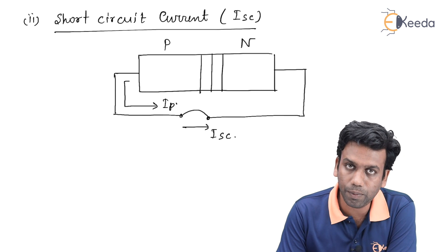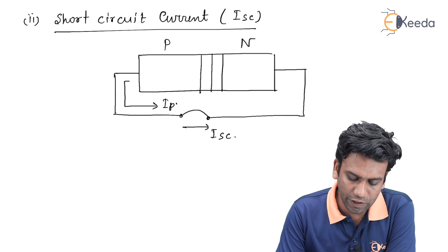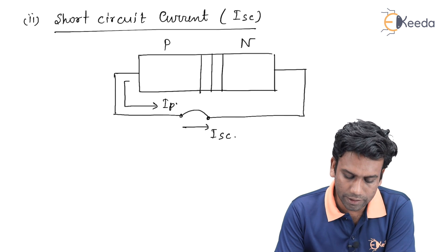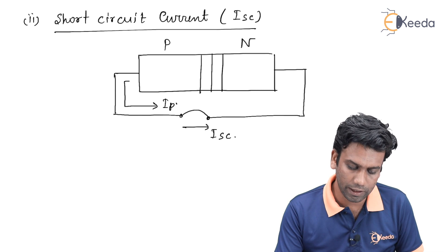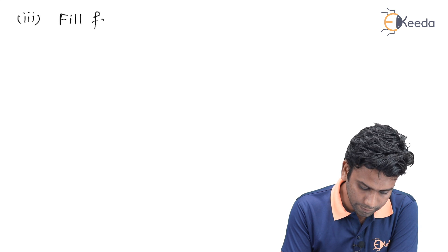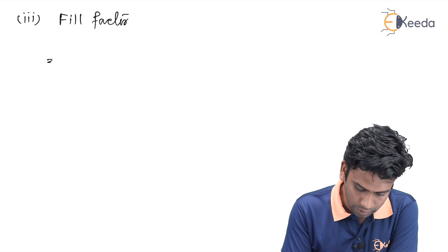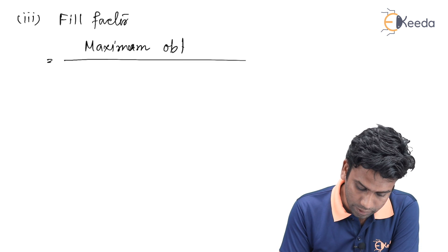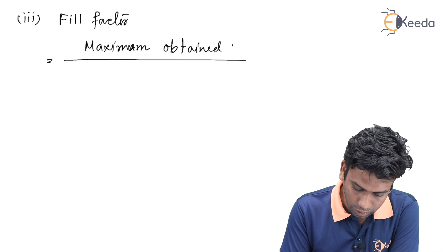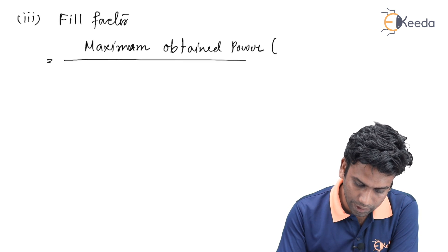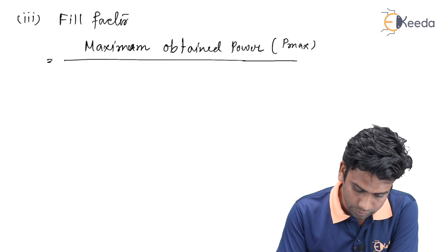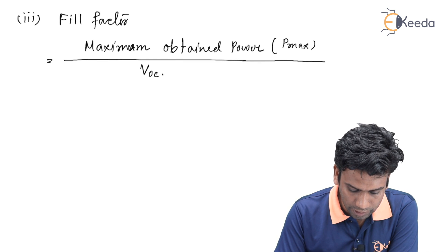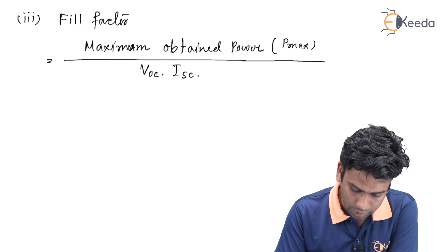The next important parameter for the solar cell is the fill factor. The fill factor is defined as the ratio of the maximum obtained power P_max to the product of the open circuit voltage V_OC and the short circuit current I_SC.